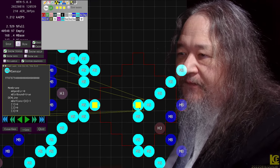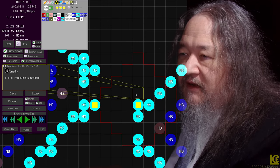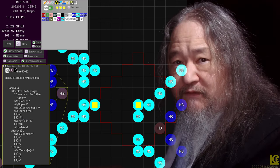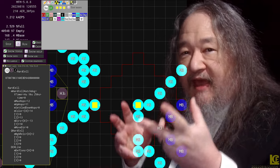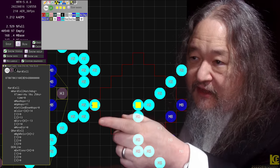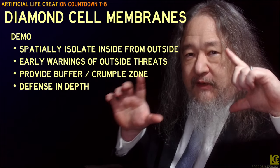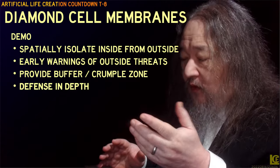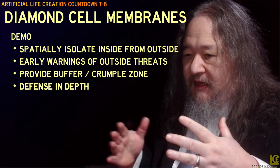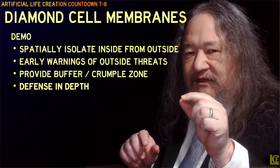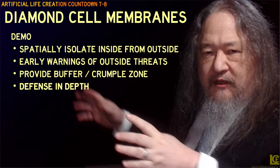So if we look at this, the diamond cell membrane that goes around the outside does all of these things for us. Number one, it helps spatially isolate the inside of the diamond cell from the outside. The HC3 atoms themselves know which direction they're going based on the neighbors that look downhill — we've talked about that before.